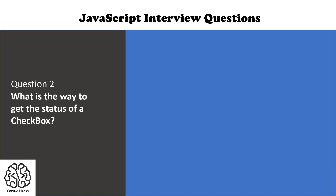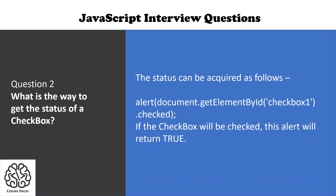Question number two is: what is the way to get the status of a checkbox? In this example, if the checkbox is checked, the alert will return true. In the alert, we have checked whether this ID has the checked attribute or not.